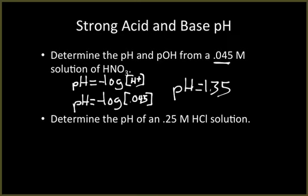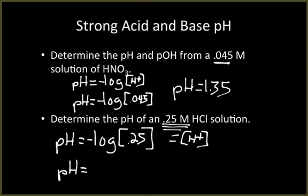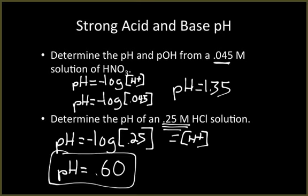Determine the pH of a 0.25 M HCl solution. Again, this molarity gives us our H+ concentration directly. Plugging into pH = negative log of H+ and solving gives a pH of 0.60 — an even stronger acid. Take your time going through it step by step, read the directions carefully, and you should have no problem.